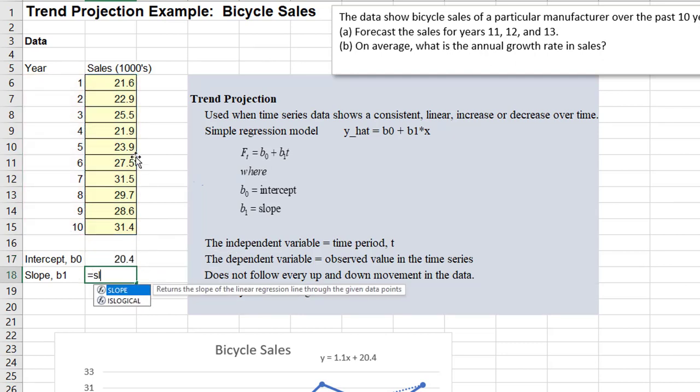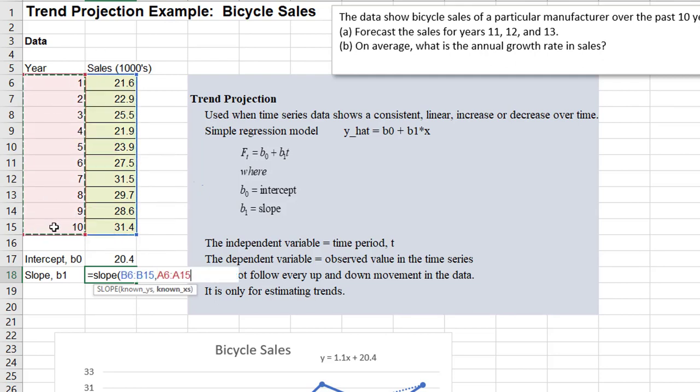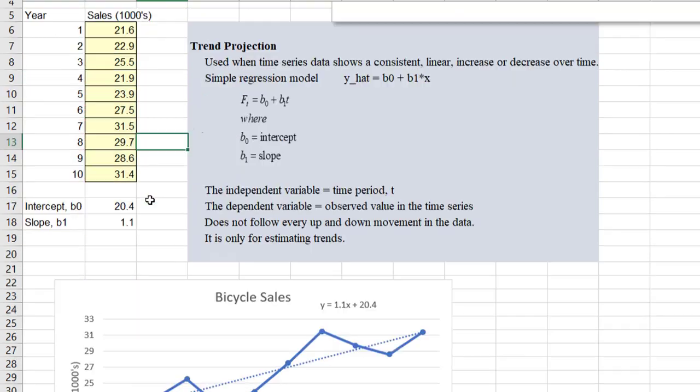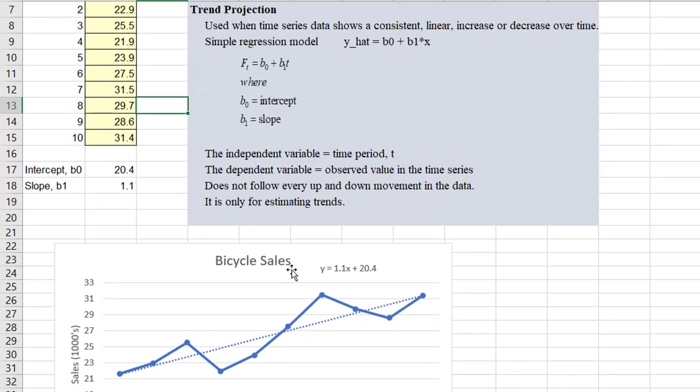And the same kind of thing for the slope, y values, sales, followed by the year, the time periods. Okay, so we could see that we get the same values, 1.1 for the slope and the 20.4 for the intercept.